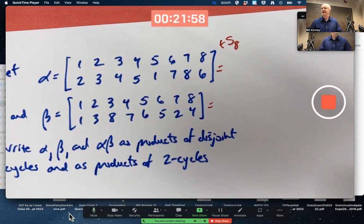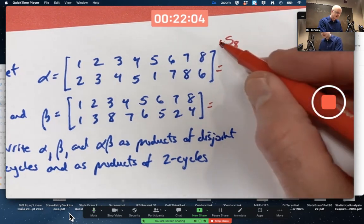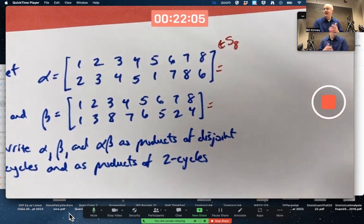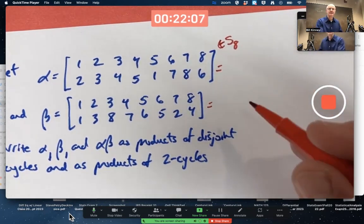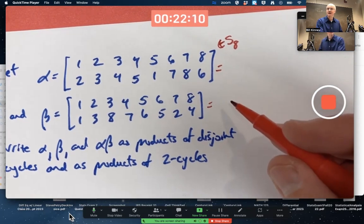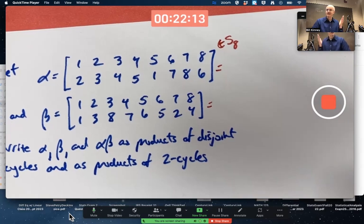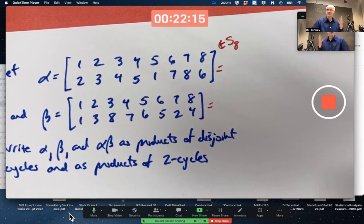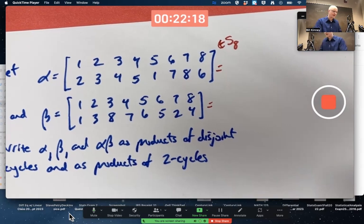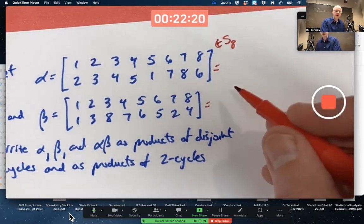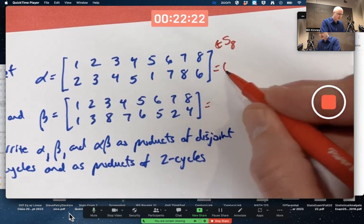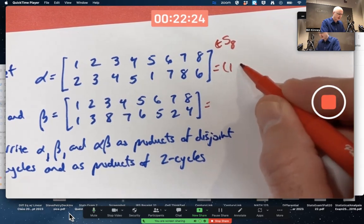Previous examples were elements of S6, or at least could be thought of that way. They actually can be thought of as elements of Sn where n is bigger than 8. These could be thought of as elements of S9, or S10, or S11, etc. As long as you assume that the bigger numbers are mapped to themselves, you could consider them that way. That's more common if you're going to write it in cycle notation. Anyway here, take it one at a time.